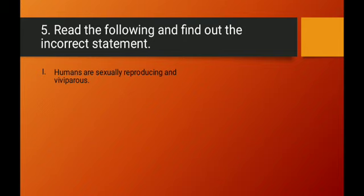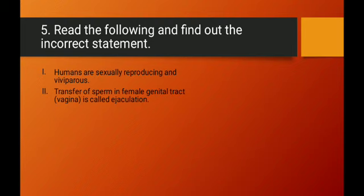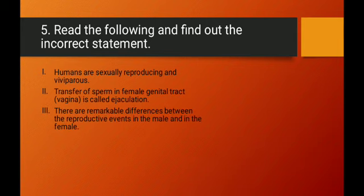Question number five: find the incorrect statement. Statement 1 — humans are sexually reproducing and viviparous — is correct. Statement 2 — transfer of sperm into the female genital tract is called ejaculation — is wrong; the correct term is insemination. Ejaculation refers to the releasing of semen from the penis, whereas insemination is when semen is released into the female reproductive tract.